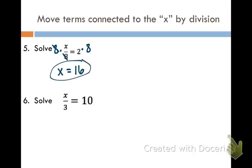Same thing for number six. I want to get the x alone. The three is attached by division. So I'm going to multiply both sides by three. They cancel out on the left. And I just get x equals thirty.